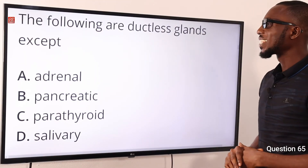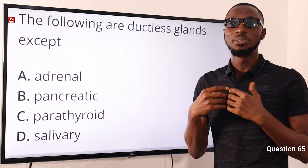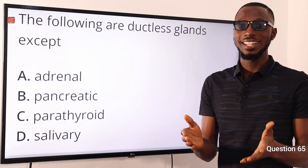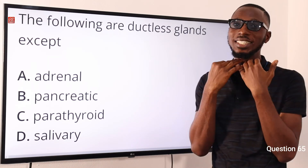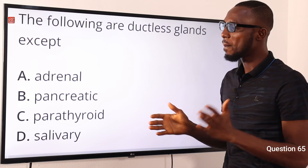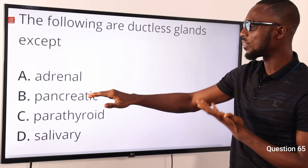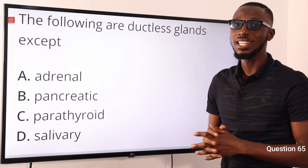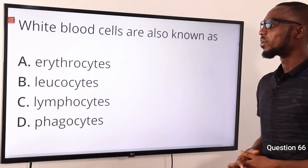Number 65: the following are ductless glands except what? Ductless glands release their hormones directly into the bloodstream. Examples include the adrenal gland, pancreas, parathyroid, thyroid, pituitary gland, and gonads — these are endocrine glands. The exception here is the salivary gland, which is not an endocrine gland. So option D is the correct option.